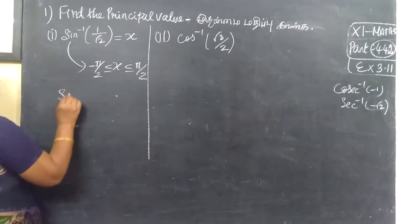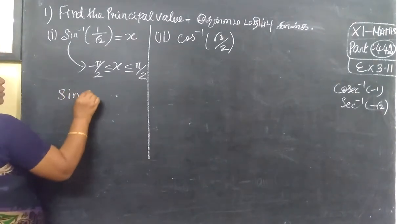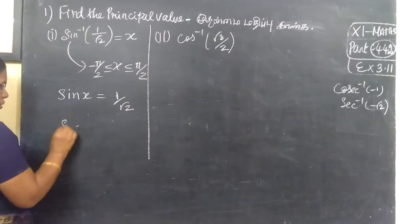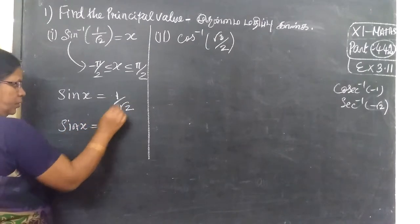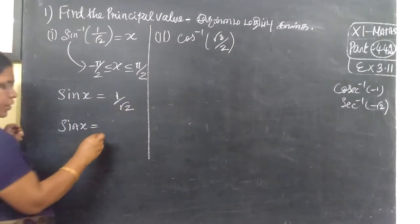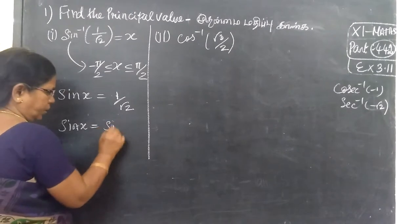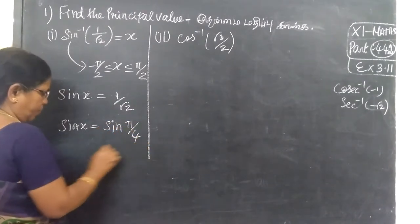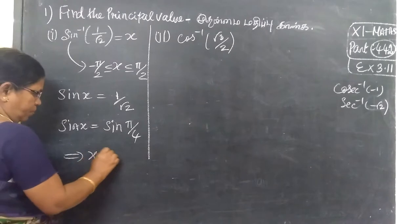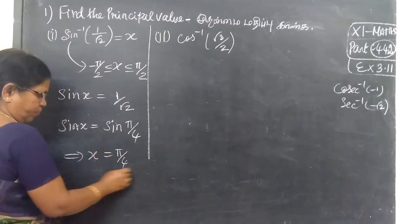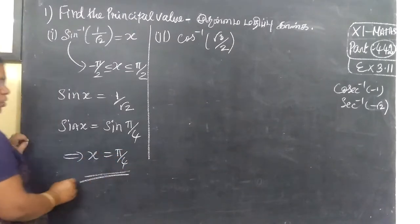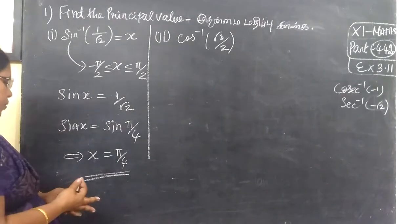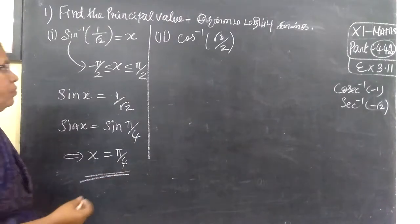Then sin x is equal to π/4. So, sin x is equal to π/4. The principal value of sin x is equal to π/4.